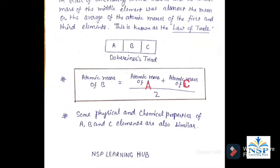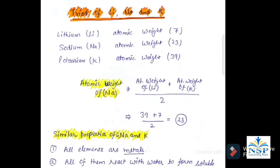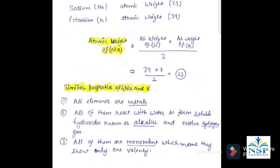According to Dobereiner, some physical and chemical properties of A, B, and C elements are also similar. In Dobereiner's first triad, lithium, sodium, and potassium are together. Lithium has atomic weight 7, sodium has atomic weight 23, and potassium has atomic weight 39. The atomic weight of sodium is equal to the average of the atomic masses of lithium and potassium, which is 23, and sodium exactly has atomic weight 23.